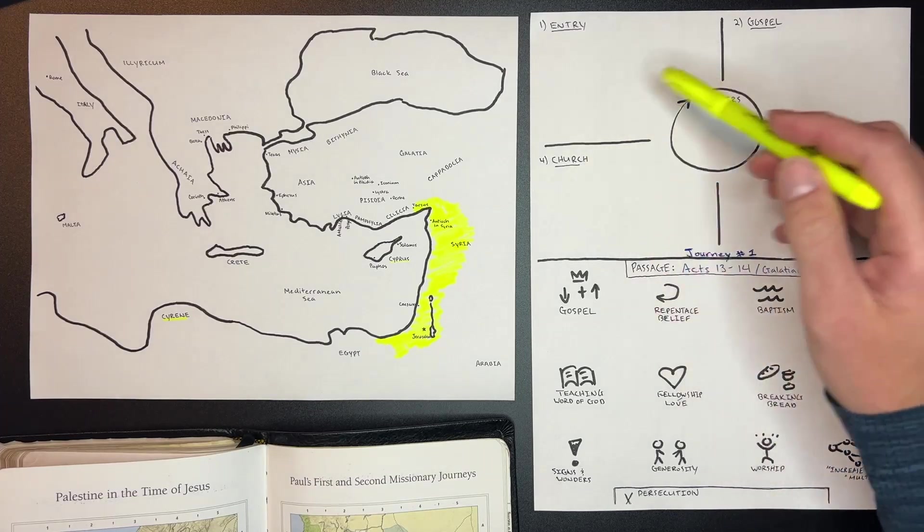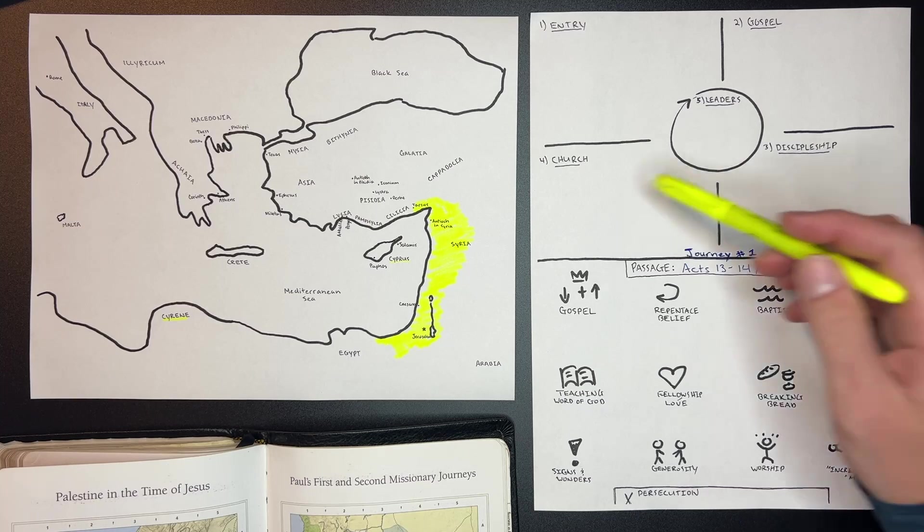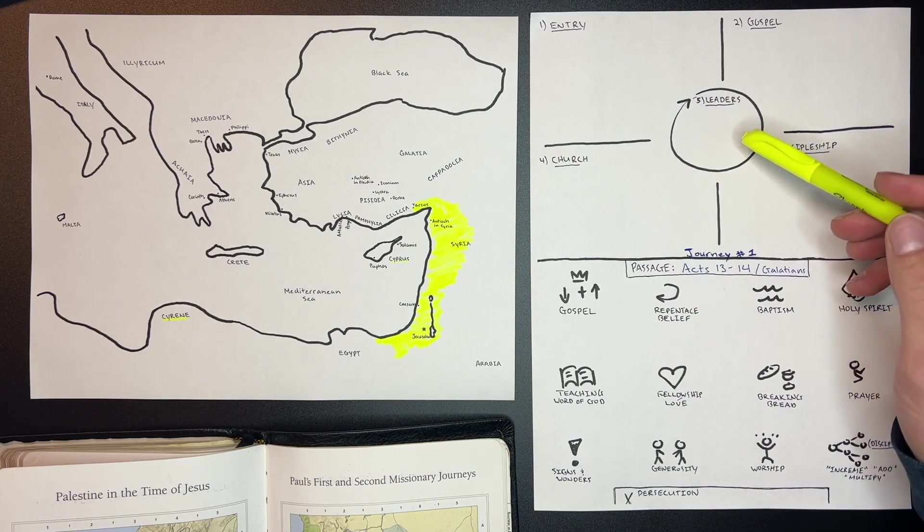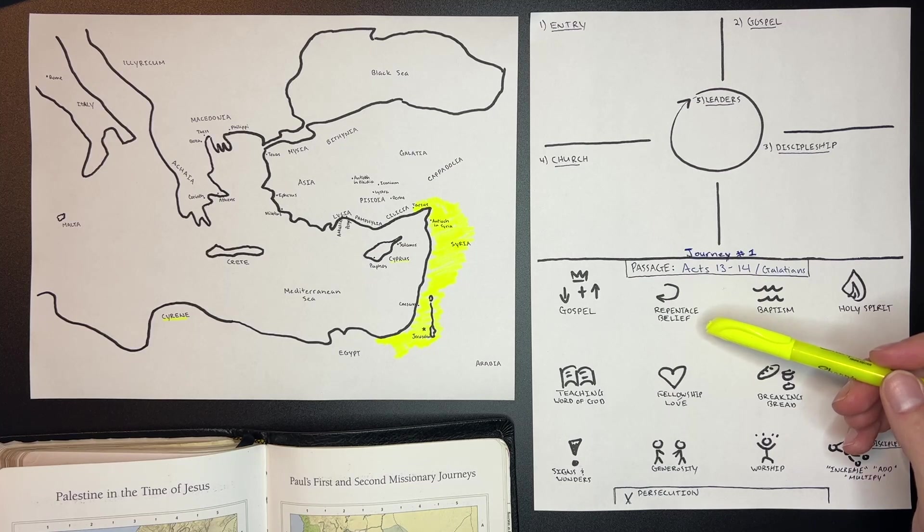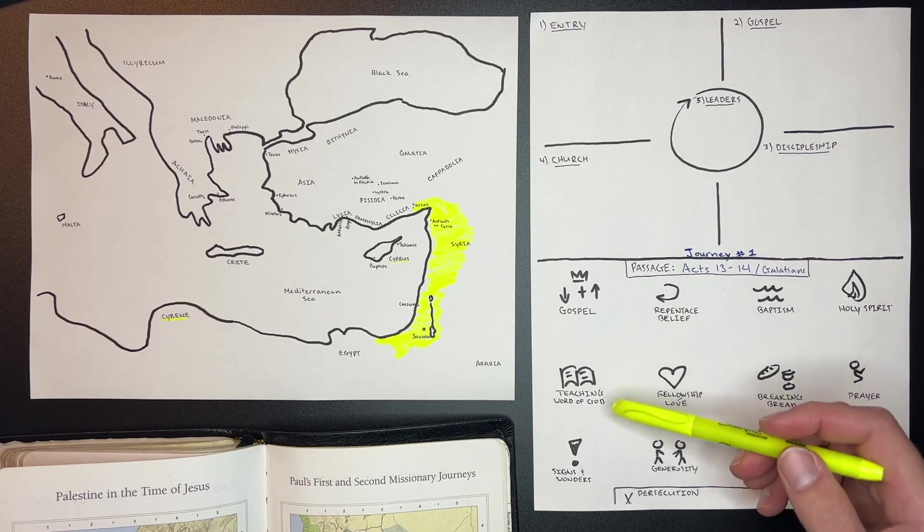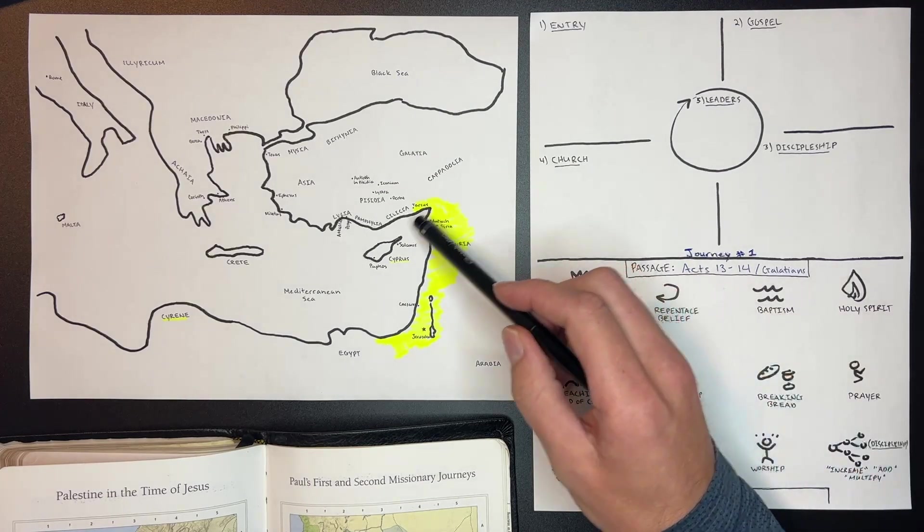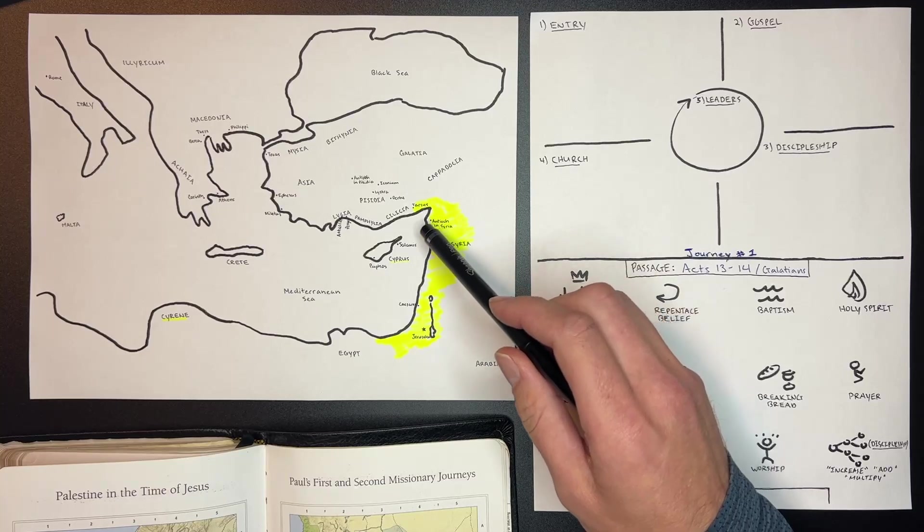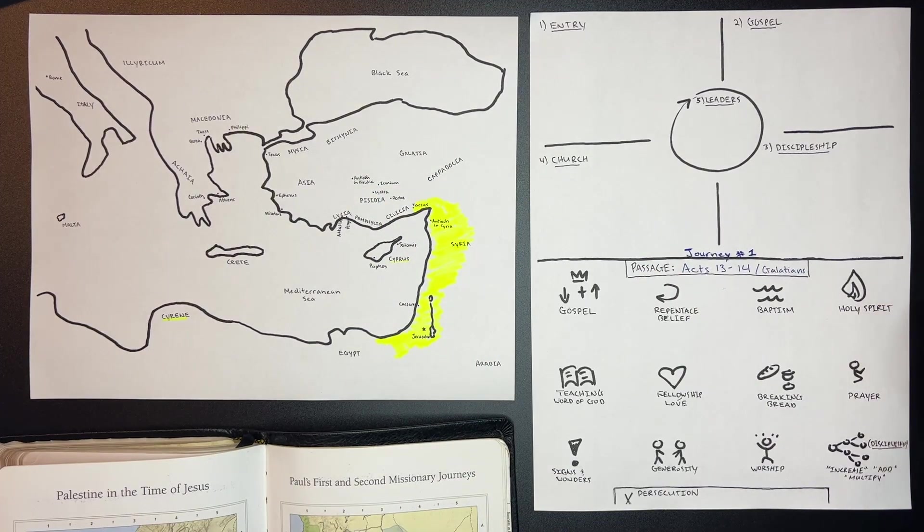Ask yourselves the questions: Where did they go? Who did they begin to speak with? How did they share the gospel? What did it look like to make disciples? Where do we see church gathering? Leadership development? If you see any notes on how they proclaim the gospel specifically, what did repentance and belief look like? What about baptism, the Holy Spirit, teaching of the Word of God, fellowship and love, breaking of bread, prayer, signs and wonders, generosity, worship, discipleship, anywhere it says increase, add, multiply, or anywhere where you begin to see discipleship multiplying out, and then also any instances of persecution. On your map, you can draw out where they went - sent out from Antioch, going down to Cyprus and up to Antioch and Pisidia and through the region of Pisidia and Galatia. Take all the time you need, do the study, and we'll be right back.